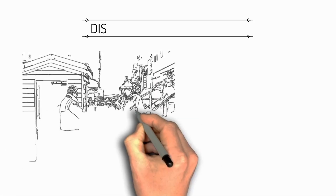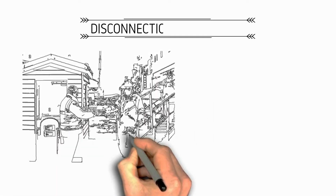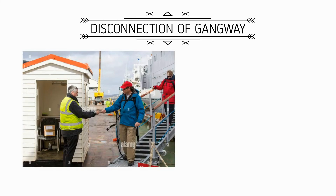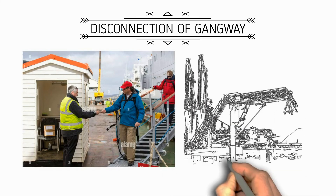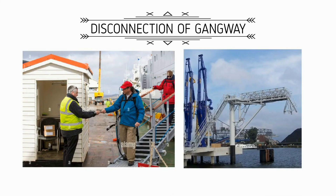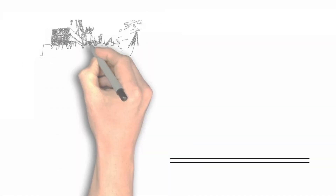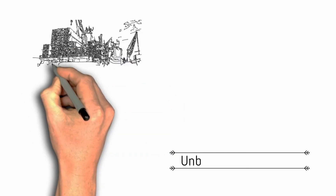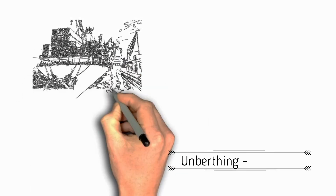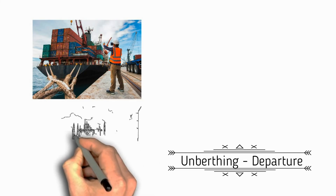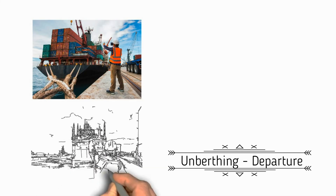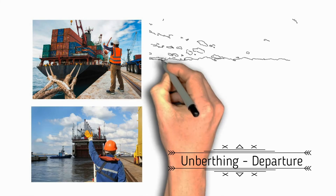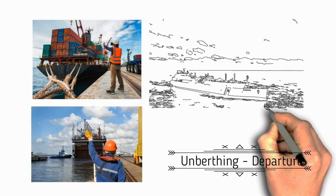Next is disconnection of gangway. When all visitors have disembarked prior to the vessel leaving port, the shore gangway or ship's gangway is disconnected. Finally, with the guidance of a pilot, the vessel leaves the terminal, casting off mooring lines and heading out to sea.